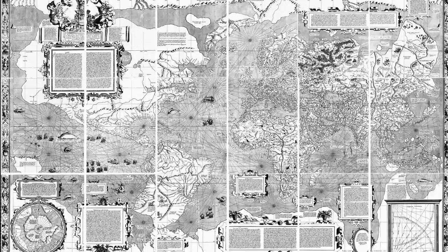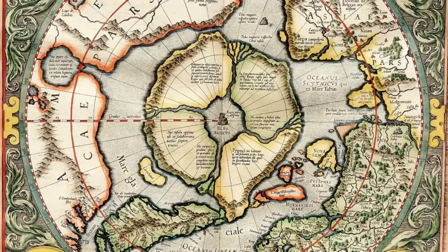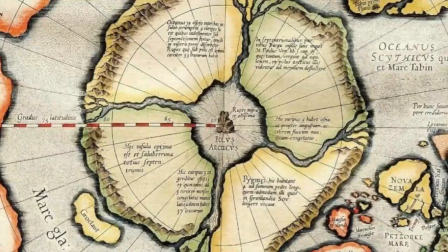The map's polar extremities of North and South are represented by huge bodies of land. In panel 13, a more detailed look of the North Pole or the Arctic is provided. It shows a quasi-circular body of land at the North Pole, separated into four quadrant continents with what appears to be an island in the middle. Mercator's 1595 world map presents this Arctic region in more detail. The body of land or rock in the centre of these four quadrant continents is called Rupes Nigra, which translates to Black Rock.